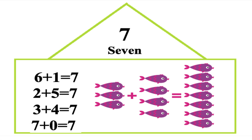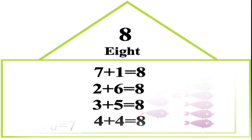There's a math family you should know and seven is its name oh! Six plus one, two plus five, three plus four, seven plus zero — all equal seven, you know.